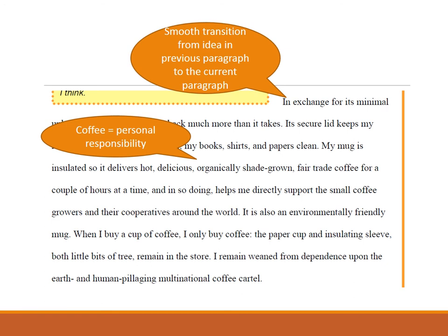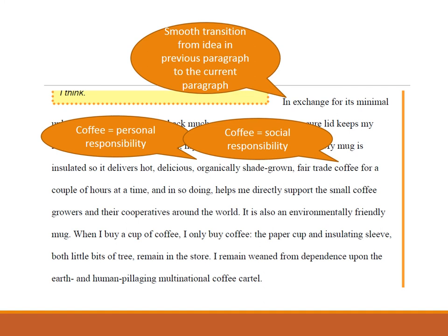He says 'my mug is insulated, so it delivers hot, delicious, organically shade-grown, fair trade coffee for a couple of hours at a time.' Organically — people who look for organic things feel personally responsible, like they're eating something healthy that's good for the environment, so he feels like a good person. Shade-grown, fair trade coffee makes him feel socially responsible — he's doing something that's not going to hurt other people. And at the end: 'I remain weaned from dependence upon the earth and human pillaging of multinational coffee cartels' — here he's feeling economically responsible. So he's talking about all the different things important for a person to feel: personally responsible, socially responsible, economically responsible.